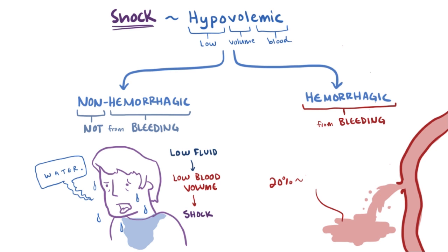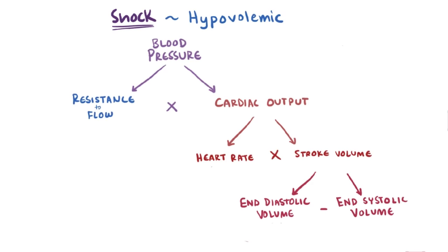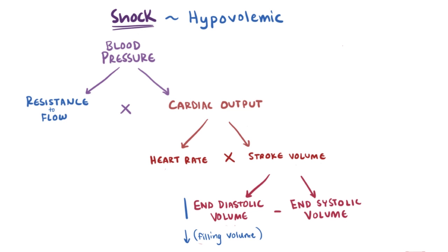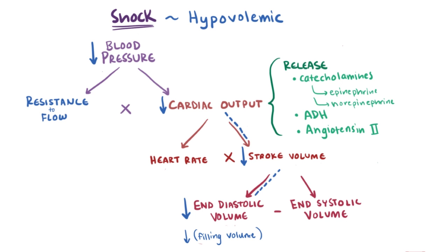A loss of about 20% of total blood volume, roughly one liter, can be enough to induce hypovolemic shock. When that liter of blood leaves circulation, the total volume filling into the heart goes down, meaning end diastolic volume goes down, stroke volume goes down, cardiac output goes down, and finally blood pressure goes down. In response, catecholamines like epinephrine and norepinephrine, ADH, and angiotensin II are released, causing vasoconstriction and increased heart rate, which raises cardiac output and blood pressure.